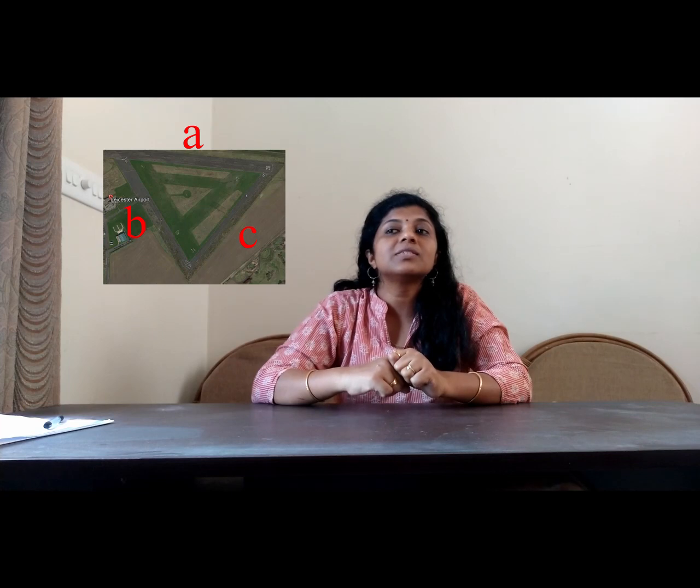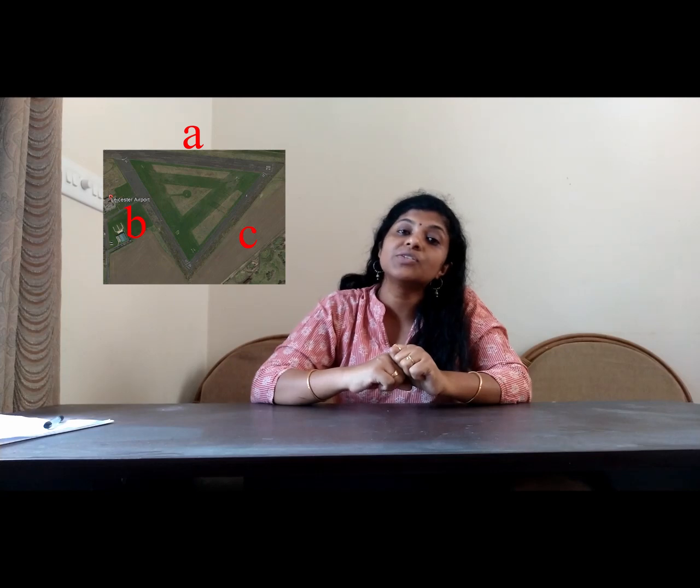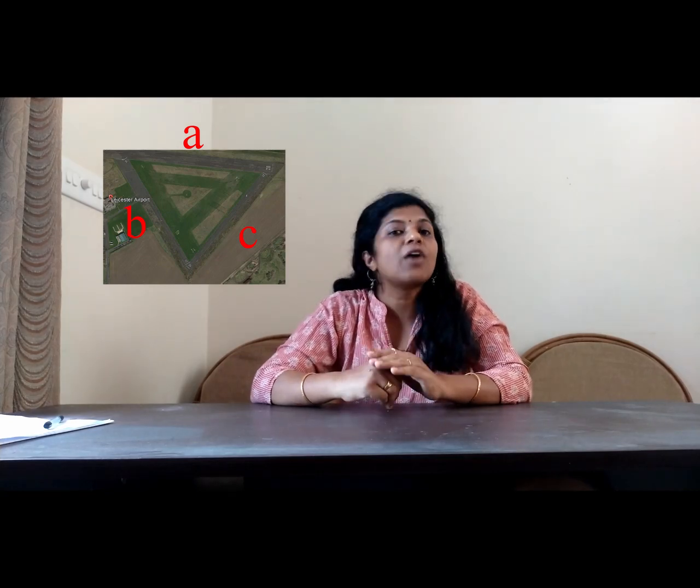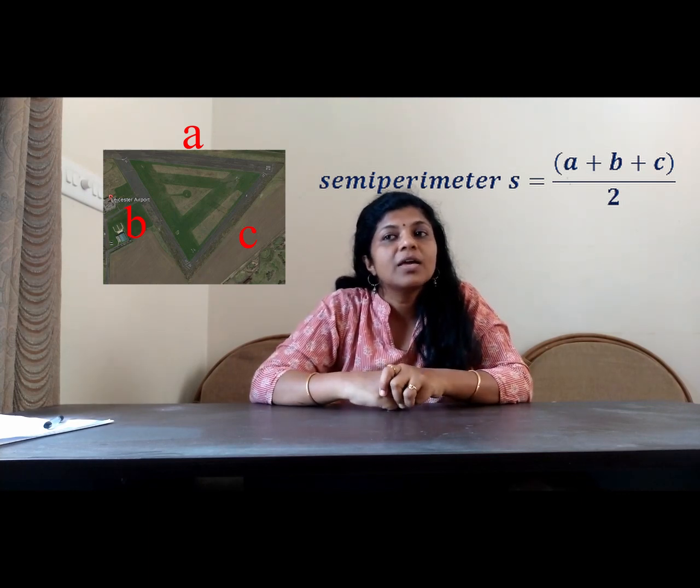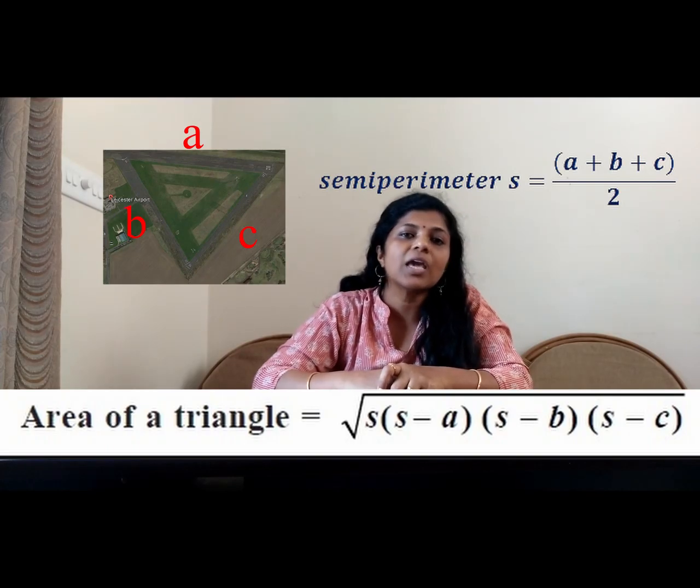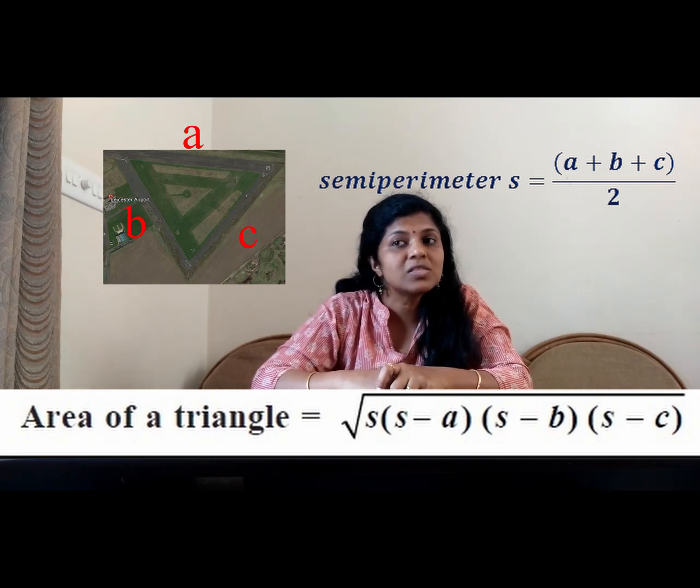So, how can we find it out? Mathematician Heron came up with a solution to this problem. If A, B, C are the sides of a triangle, then its perimeter is A plus B plus C and he has taken that as 2S. Therefore, what is the half of the perimeter? A plus B plus C divided by 2. And, he found the formula and he derived the formula. Therefore, area of a triangle is equal to square root of S into S minus A into S minus B into S minus C. Here, S is the semi-perimeter. That is, half of the perimeter. A is the one side, B is the other side and C is the other side.